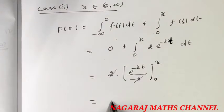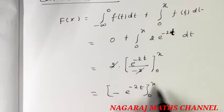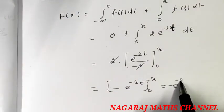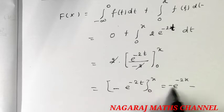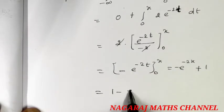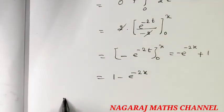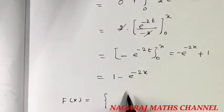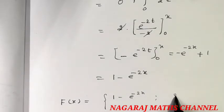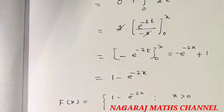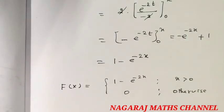The 2 and minus 2 cancel, evaluated from 0 to x, giving 1 minus e to the power of minus 2x. So the distribution function F of x equals 1 minus e to the power of minus 2x for x greater than 0, and 0 otherwise.